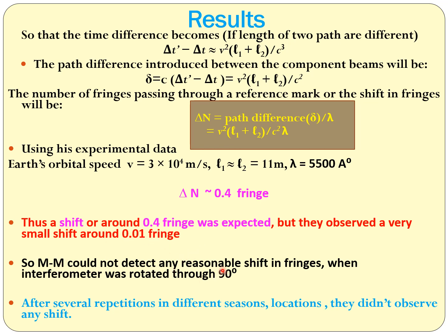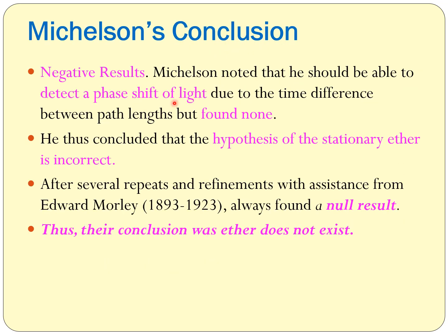They could not detect any reasonable shift in the fringes when the interferometer was rotated through 90 degrees. After several repetitions — in different seasons, different locations, even at the north and south poles — they observed no fringe shift of the expected magnitude, only 0.01 or even less. Their conclusion was negative results: no shift as expected, and therefore the hypothesis of stationary ether is incorrect. Even after several repetitions they found null results.